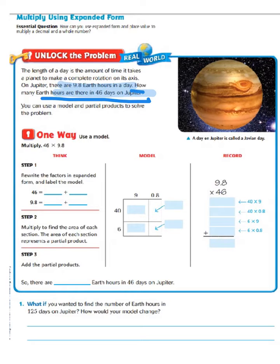One way that we can solve this is to use a model and partial products. So the first way we're going to do is use that model. We're going to multiply 46 times 9 and 8 tenths. Step 1 requires us to rewrite the factors in expanded form and label the model. We know 46 is 40 and 6 ones. So if we come over and look at our model, we will do these vertically — we have our 40 and our 6 ones right below it.